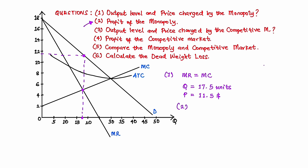Question 2 says to determine the profit of the monopoly. The formula for profit, given the information we have on the graph, is equal to the quantity multiplied by the price minus the average total cost. So profit equals the quantity that we have gotten from question 1.